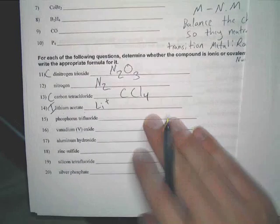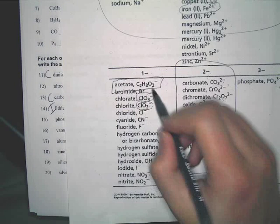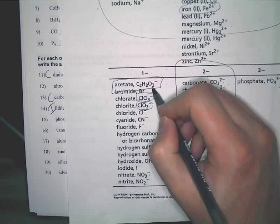So, we have lithium acetate. Now, this word you probably don't recognize. Acetate is right there. It's the very first thing on your ion chart in the negative column.